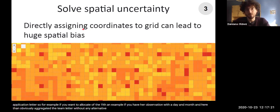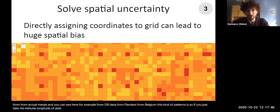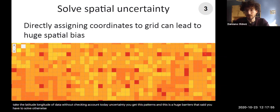The biggest problem with data is the spatial uncertainty, and it's actually not very accounted for by actual methods. And you can see here, for example, from GBIF data from Flanders, from Belgium, this kind of patterns, you see? So if you just take the latitude and longitude of data without taking account the uncertainty, you get these patterns. And this is a huge bias that you have to solve, otherwise you get wrong results.